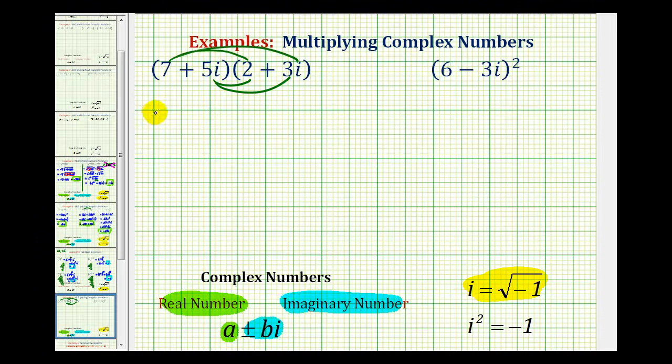So seven times two is equal to fourteen. Seven times three i is equal to twenty-one i, so plus twenty-one i. Then we have five i times two, that's going to be plus ten i. And then we have five i times three i, that'll be plus fifteen i squared.